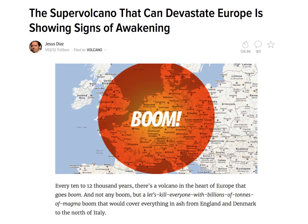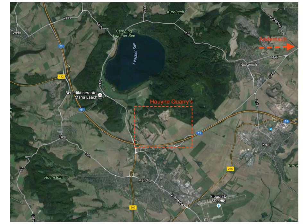The Laacher See is also the site of that supervolcano, and there is some concern it may erupt again. It's responsible for beautiful hauyne crystals — but could be quite a problem in the future. The town of Mendig is very close and a good base to stay. The quarry near Laacher See is the main location — during weekdays it's commercially mined, but on weekends they set aside material so prospectors can rummage through it to find hauyne.